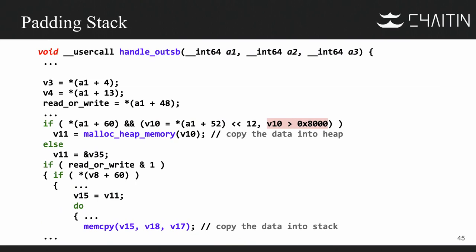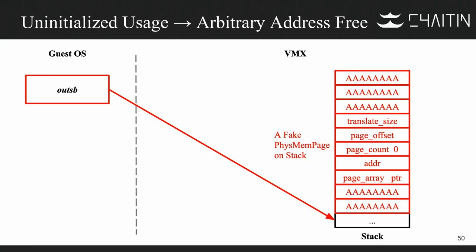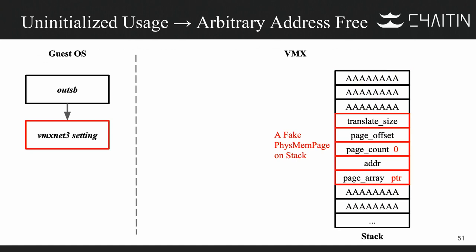This function is used when the virtualized OS tries to manage the TSB structure. If the data is small, it uses the stack to store the data and copies the data from the guest system onto the stack. So to achieve an arbitrary address free, we go into the guest OS, use the outSB instruction to corrupt the VMX stack, and construct a physical page structure — setting the page count to 0 and setting the address field to the address we want to free.